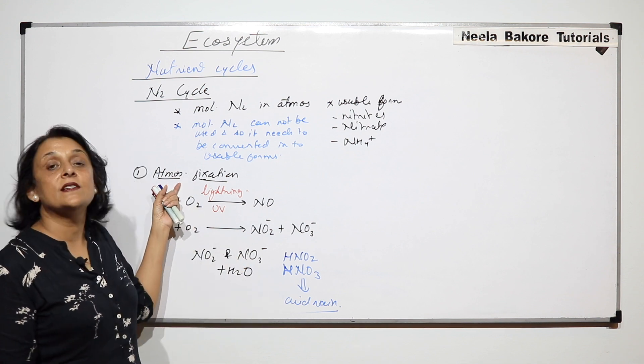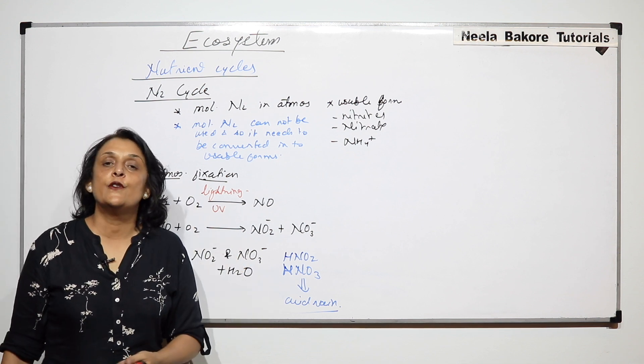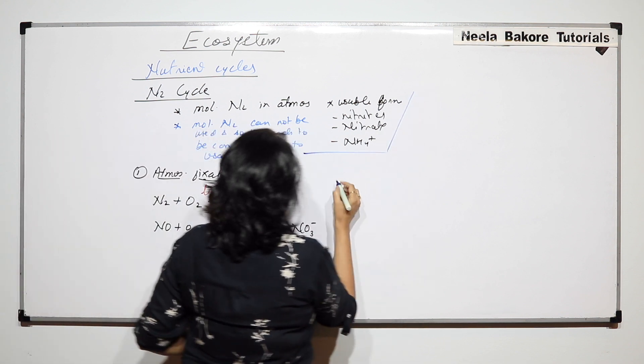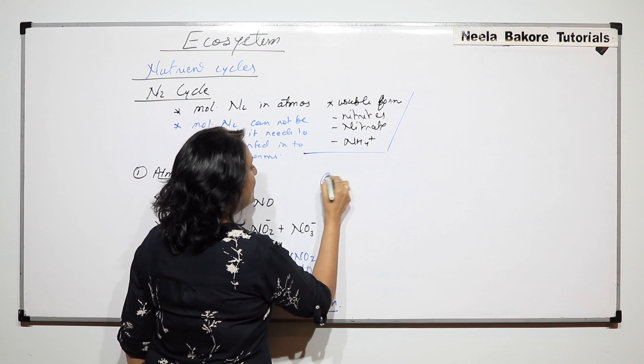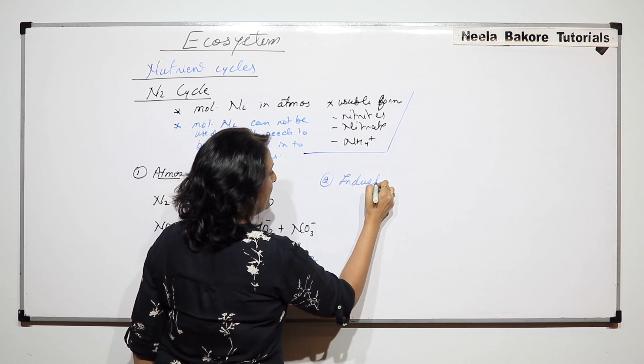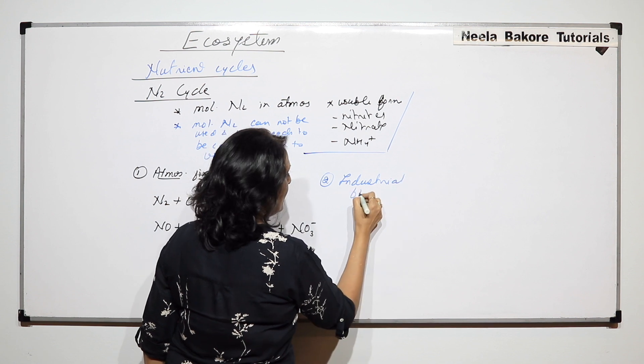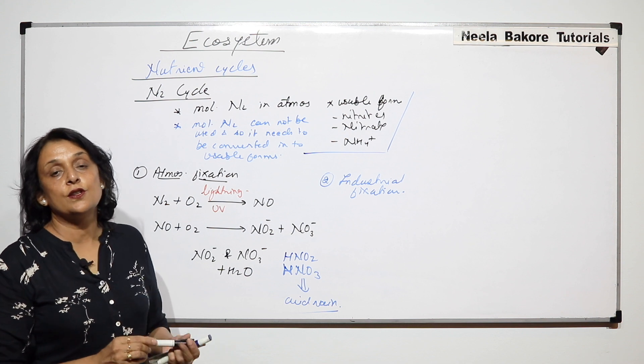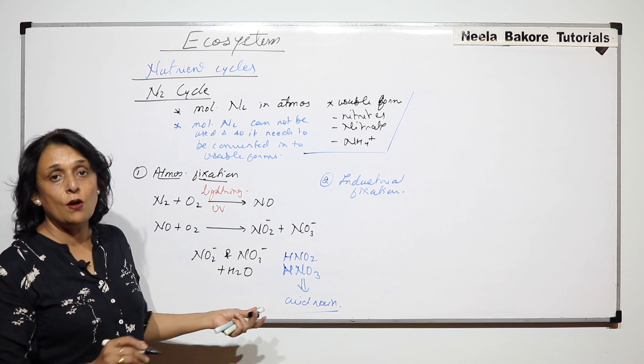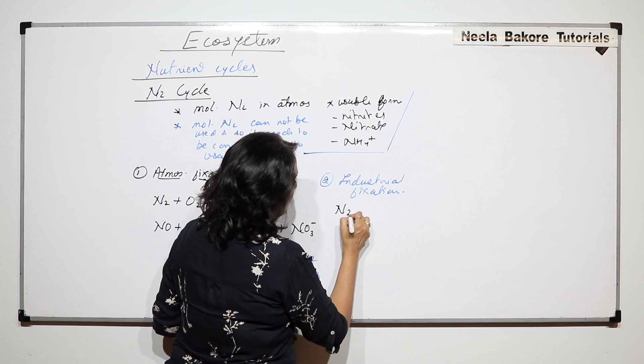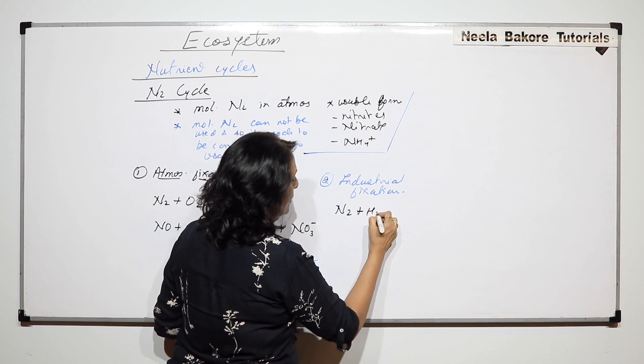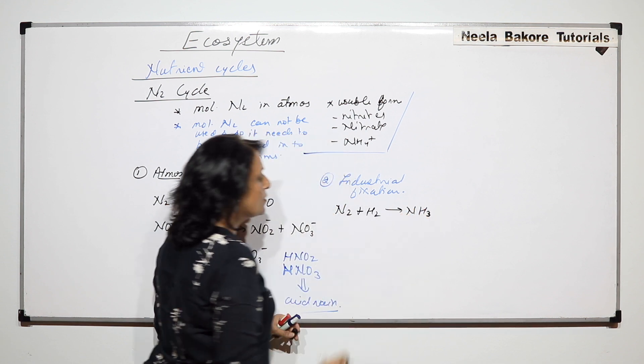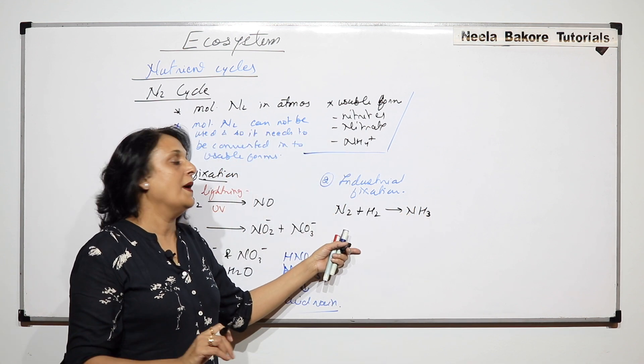So the usable forms have reached the soil and now plants can use these nitrites and nitrates. Because this reaction takes place in the atmosphere we call it atmospheric fixation. The second is called industrial fixation. And as the name tells us this fixation is taking place somewhere in the industry or in a factory.